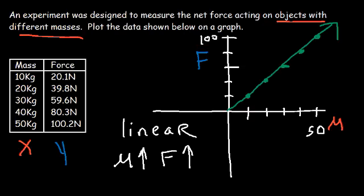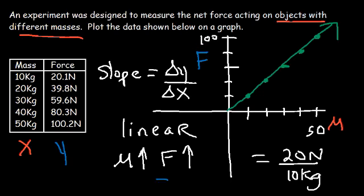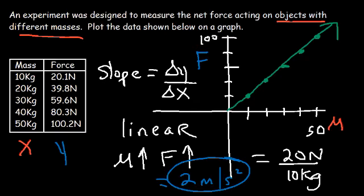What is the slope of the line? Notice that the mass increases by 10, and the force increases by 20. The slope is the change in y divided by the change in x — it's rise over run. The change in force is about 20 newtons, and the change in mass is approximately 10 kilograms. So the slope is equal to 2. It turns out that the slope of this graph represents the acceleration of the object, which is approximately 2 meters per second squared, or 2 newtons per kilogram.